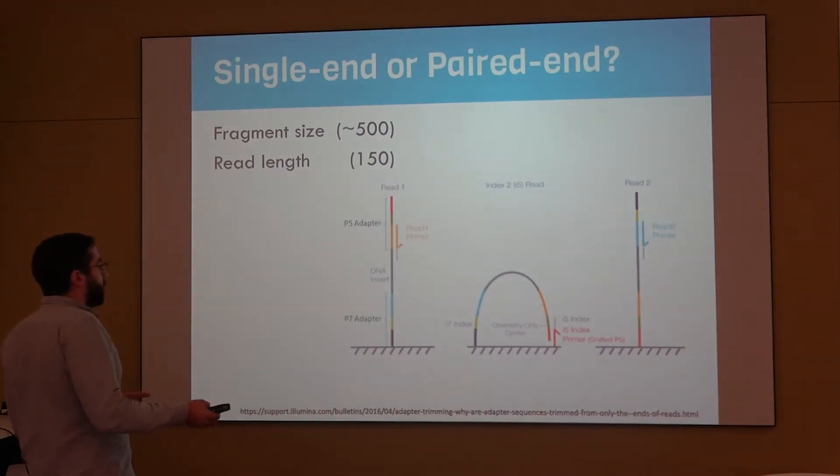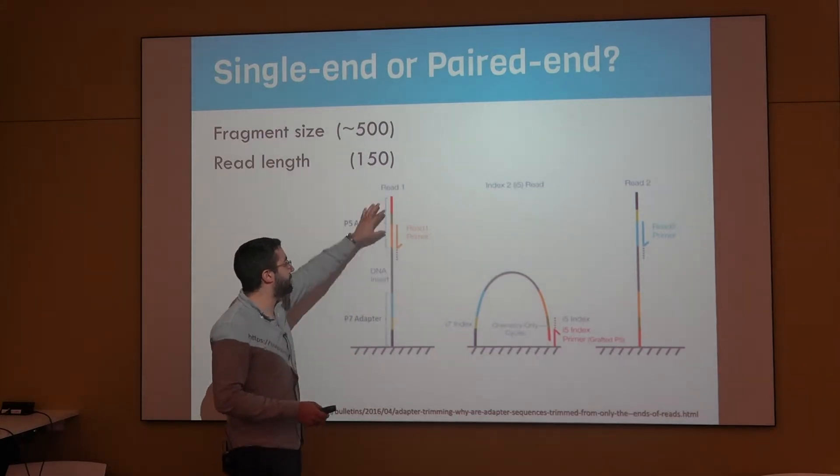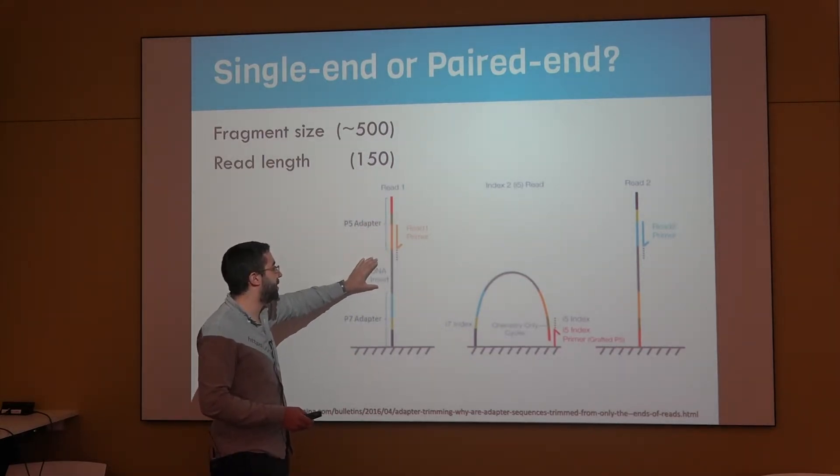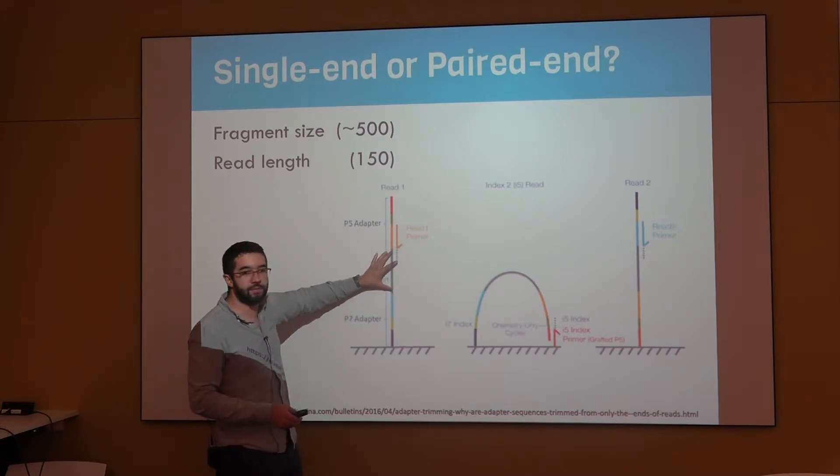So other terminology to be thinking about here is fragment size and read length. We have adapters, and then we have our piece of DNA that some people call fragment, some people call insert. This is the piece of DNA that we don't know and that we're trying to learn about.